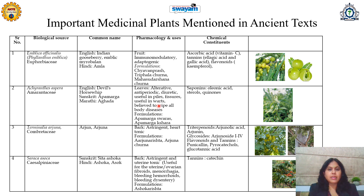The leaves are alterative, anti-periodic, diuretic, and useful in piles, fissures, and warts. It is believed to wipe away all body diseases, especially of women. It contains saponins, sterols, and quinones. It is an ingredient of formulations Apamarga Swarasa and Apamarga Kshara.